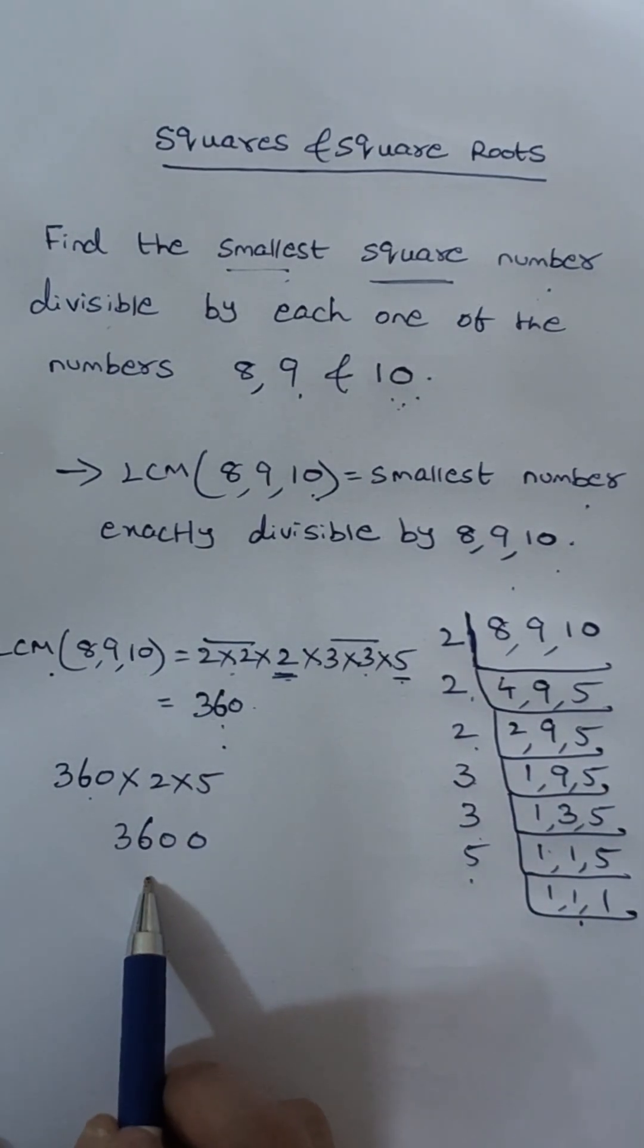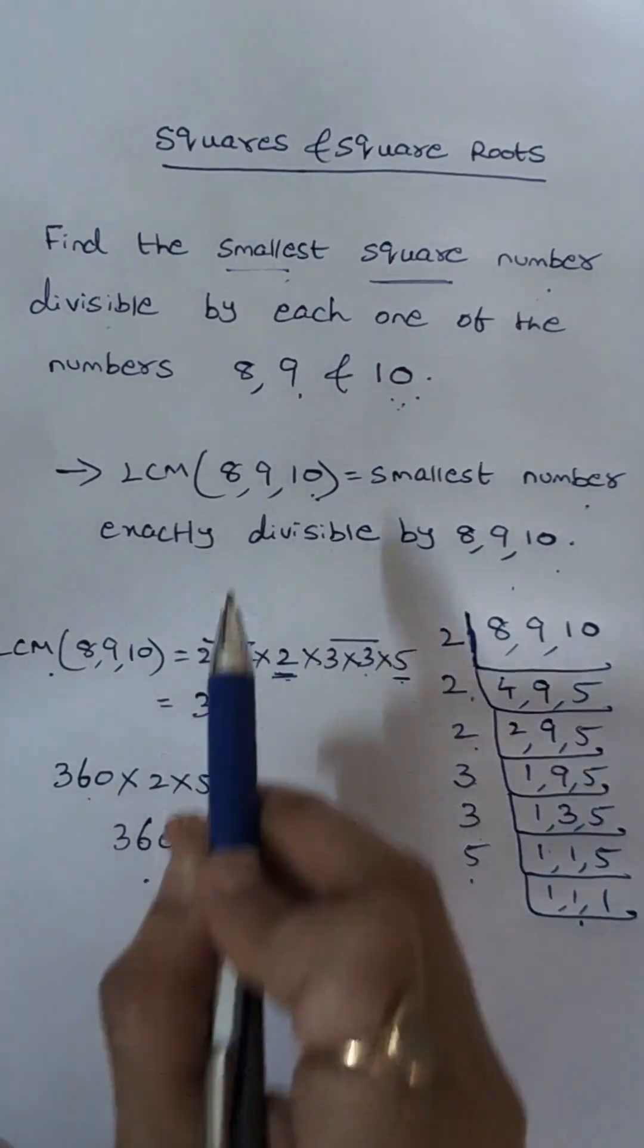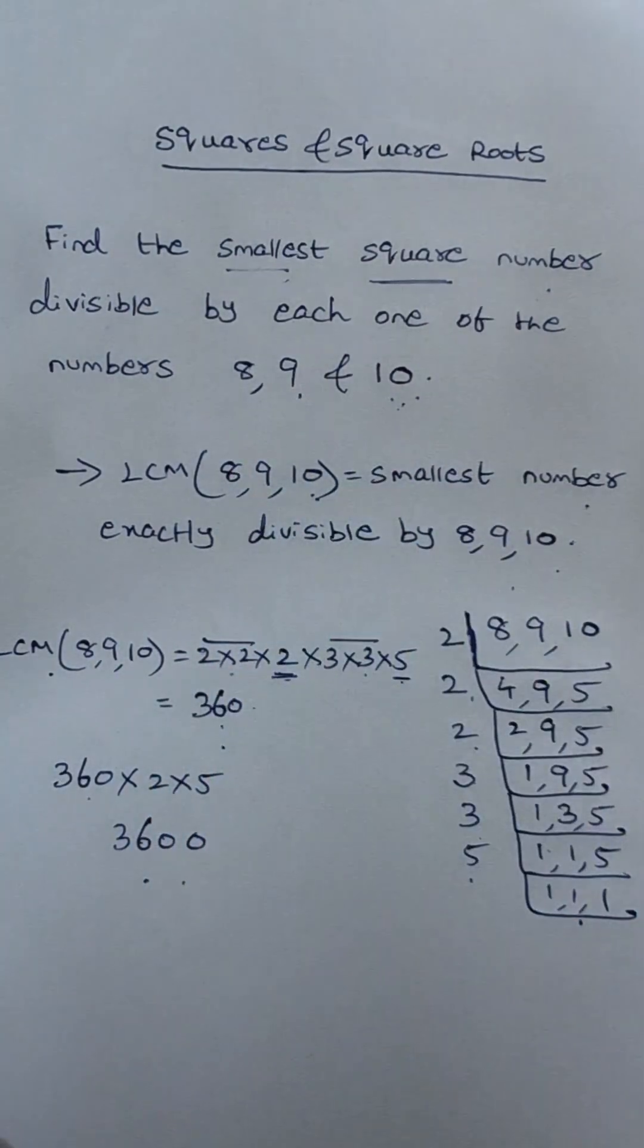So this is the required smallest perfect square number which is exactly divisible by 8, 9 and 10.